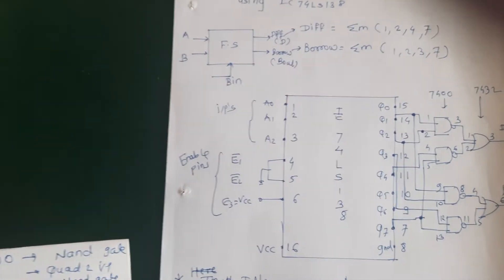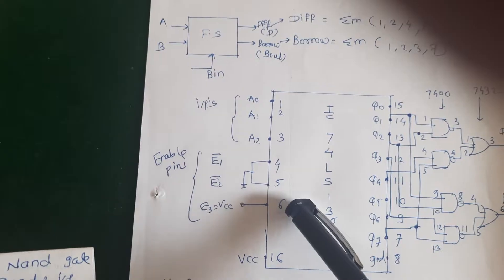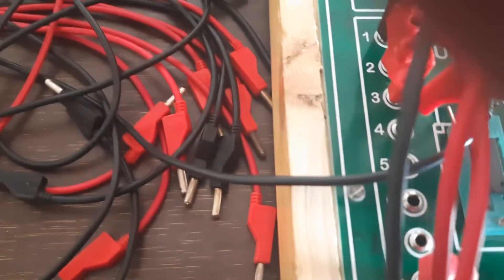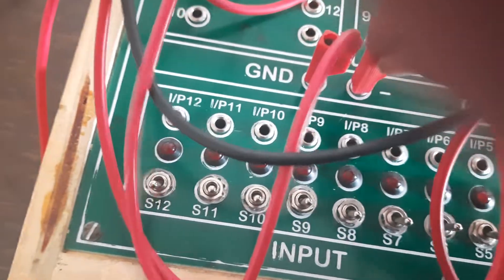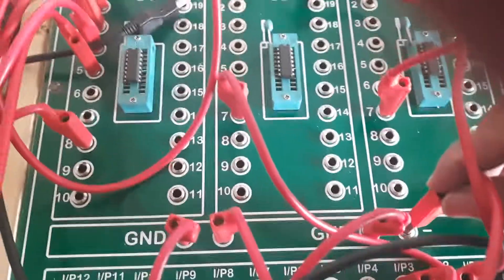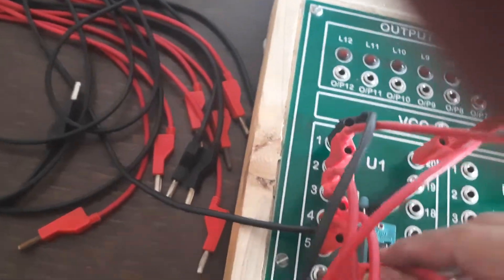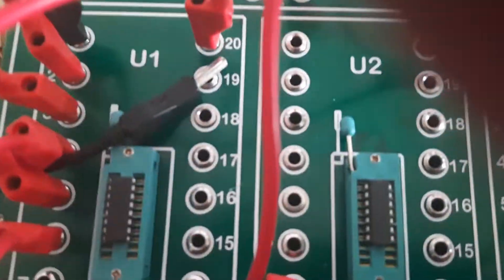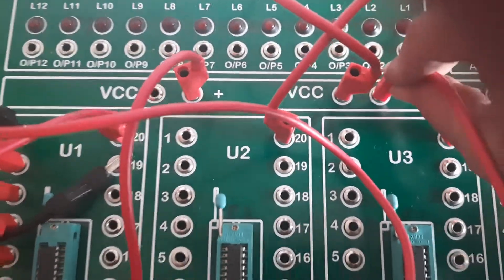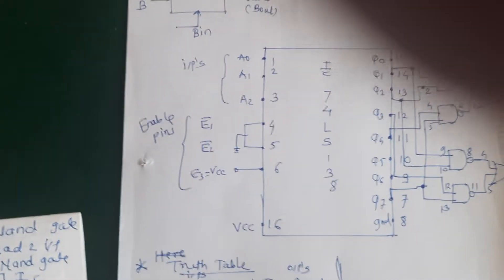Now we will give the enable connections. As seen in the figure, pins 4 and 5 are connected to ground and pin 6 is connected to VCC. Pin number 4 is connected to ground, pin number 5 is connected to ground, and pin number 6, which is the active-high enable pin, is connected to VCC. My enable connections are also complete.